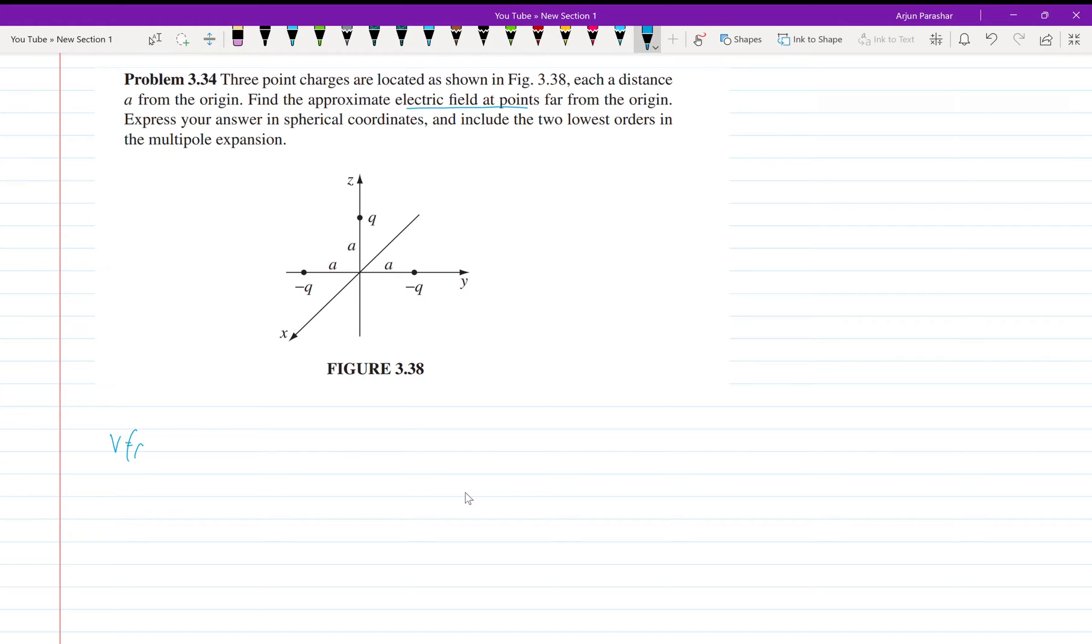The approximate potential is given by - we can directly see that for the monopole, only a charge of minus Q will be left because the other charges will cancel each other. So minus Q upon 4 pi epsilon naught R, where R is the distance from the center. This will be the monopole term.